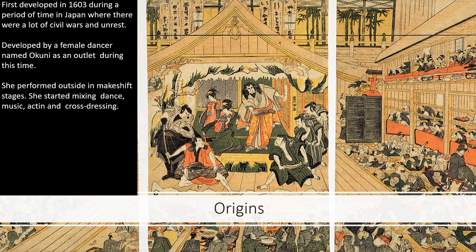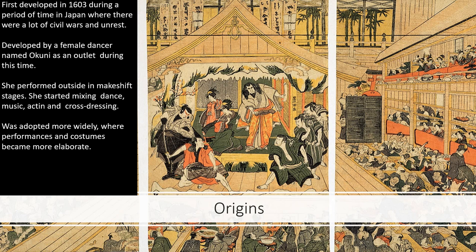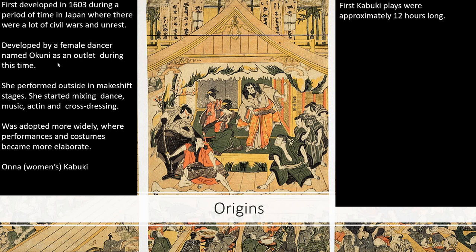She started combining dance, music, acting, and even cross-dressing to make these pieces come to life. It was then adopted more widely, where performers and costumes became more elaborate. Starting off with Okuni and just a few performers and then being adopted across Japan, the costumes and stories became a lot more rich. 'Ona,' meaning women's kabuki, used only female performers on stage.